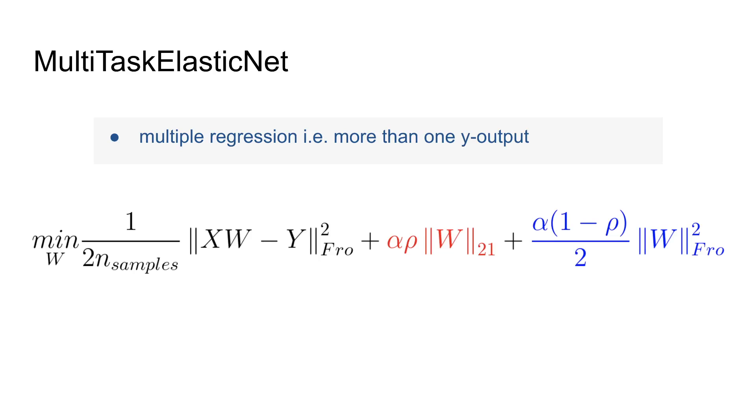Now for MultiTask ElasticNet it's similar to what we have seen before for the MultiTask Lasso where we have multiple y outputs. And therefore here the y is capital Y because it's a matrix instead of just one column, and correspondingly we therefore have the W which is a matrix as well and therefore it is denoted here by capital W.